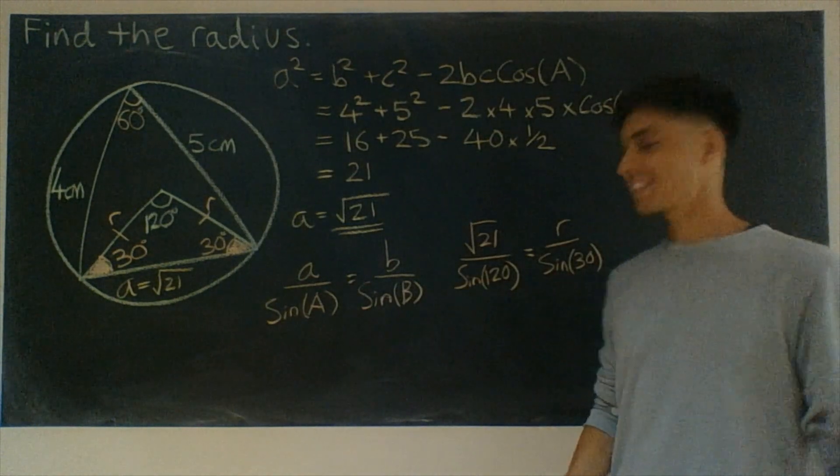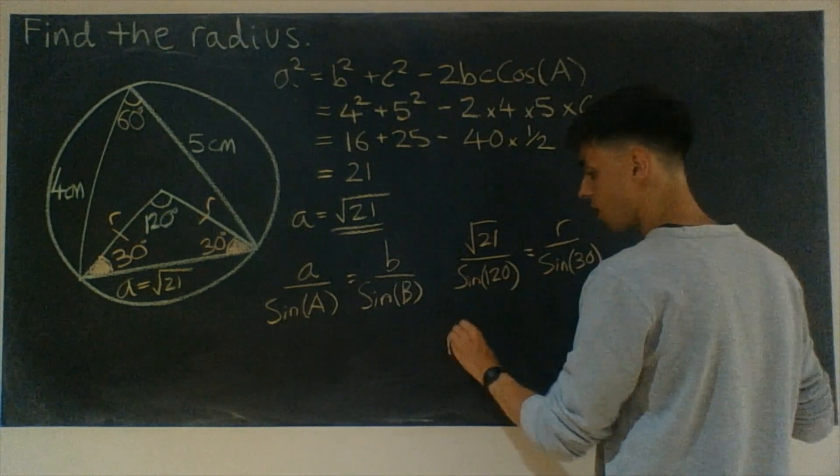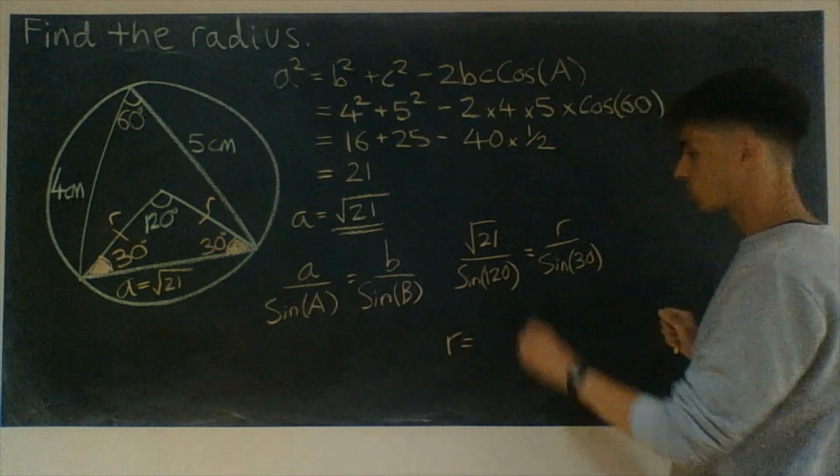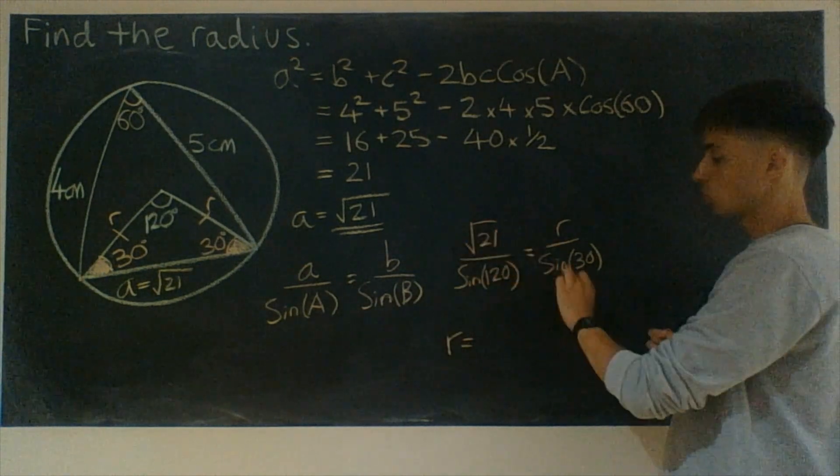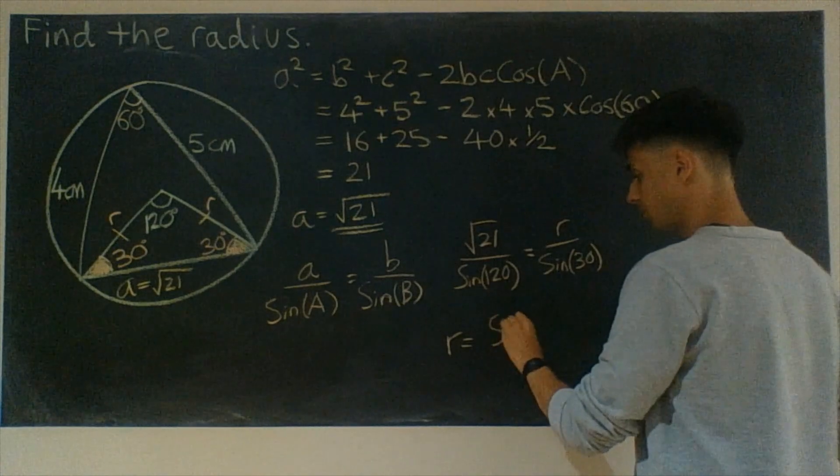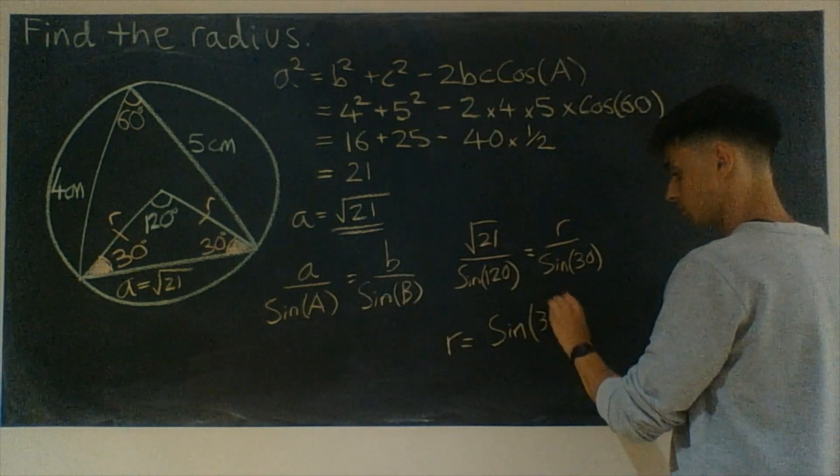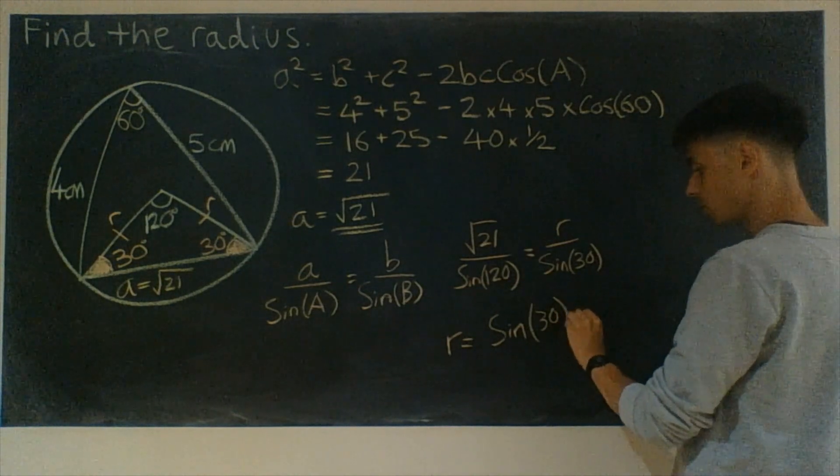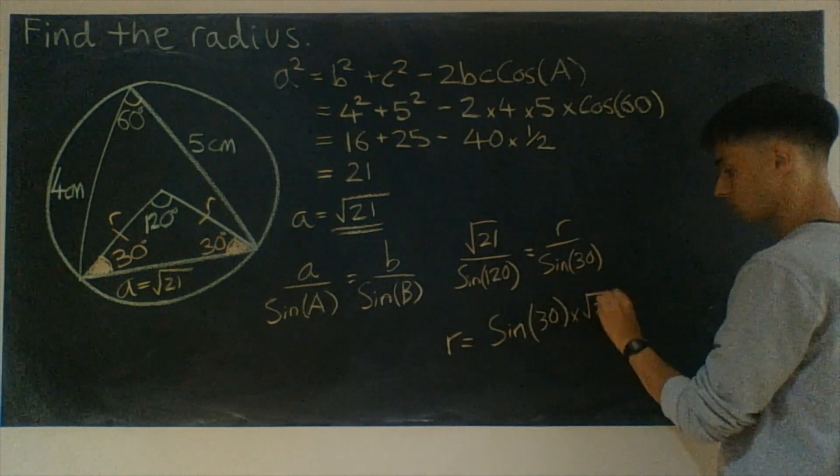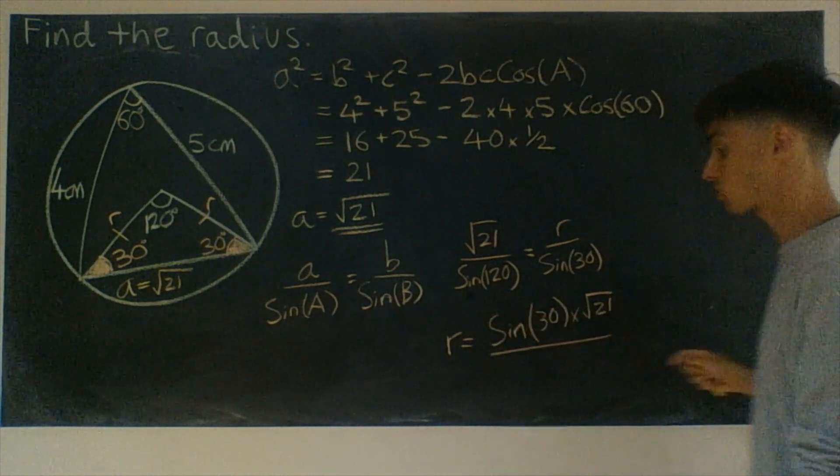At this point, let's think about making R the subject. So we could say R equals sine 30 needs to multiply over here. So sine 30 times root 21. And on the bottom of this fraction, we need to remember our sine 120.